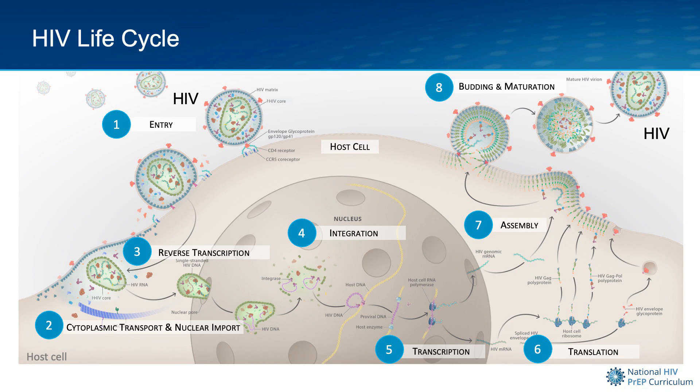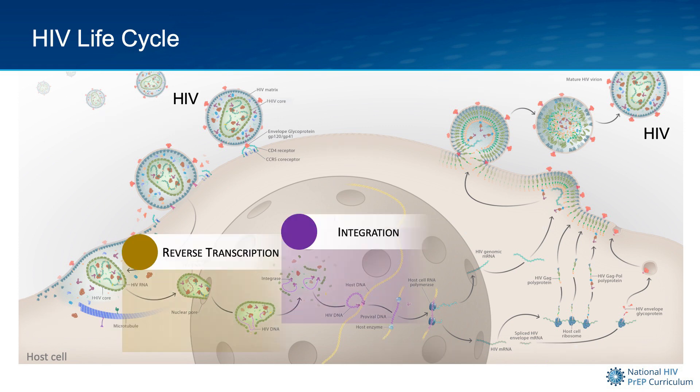The important point is that when HIV infects a cell, it generates new HIV particles, and these newly formed virions go on and infect other cells. In this discussion on how HIV PrEP medications work, I'm going to focus on two steps in the HIV life cycle: reverse transcription and integration.